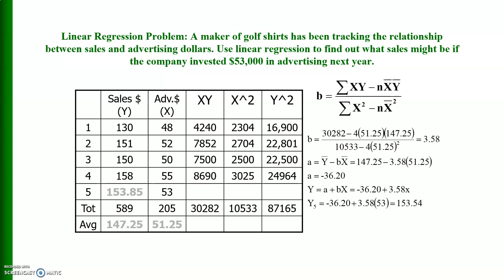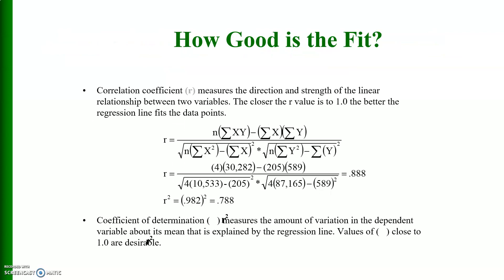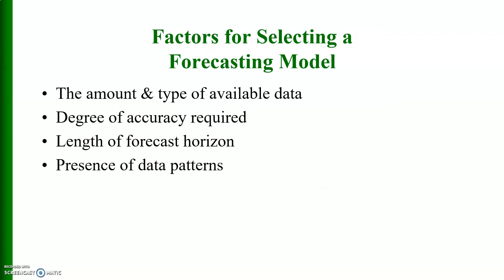How good is the fit? It depends upon the coefficient of determination, and that is equal to 0.788. It means that about 88% of the variation in the dependent variable is explained by the independent variable in the model. R is the coefficient of correlation.